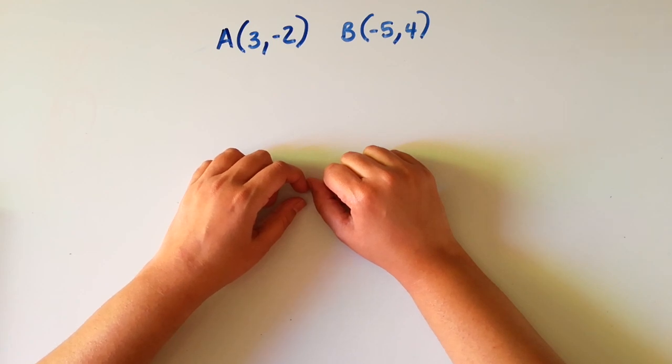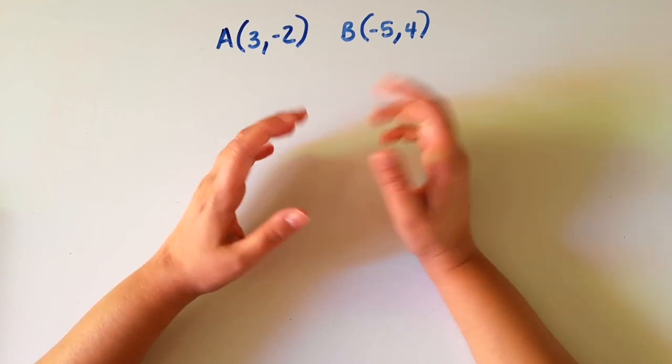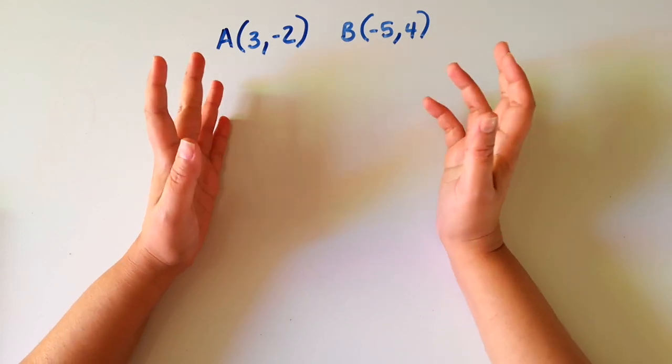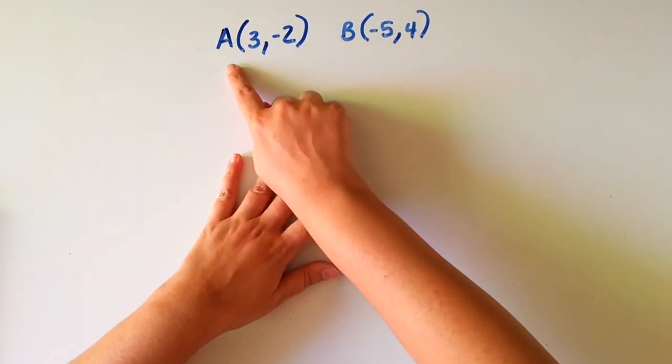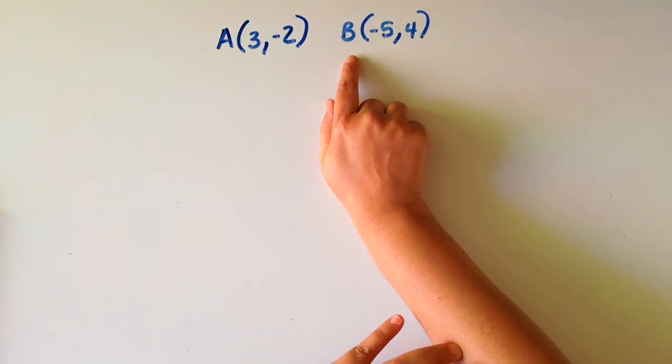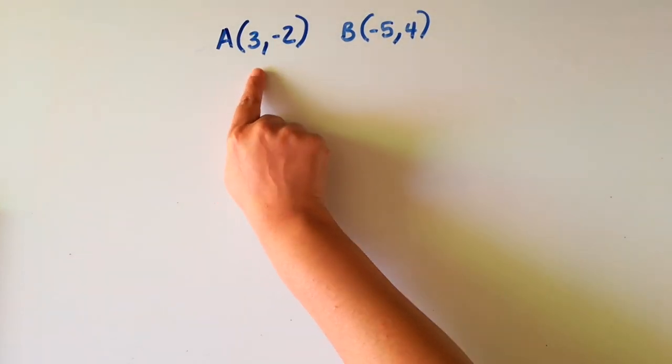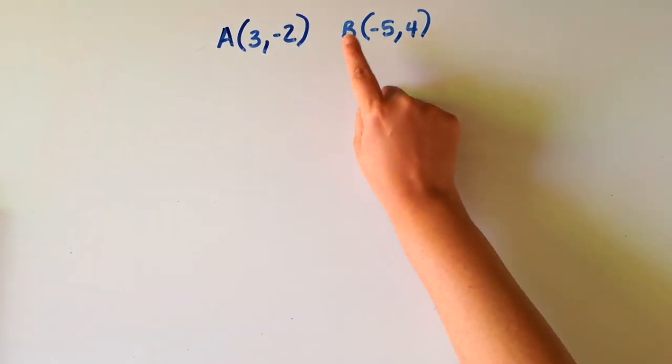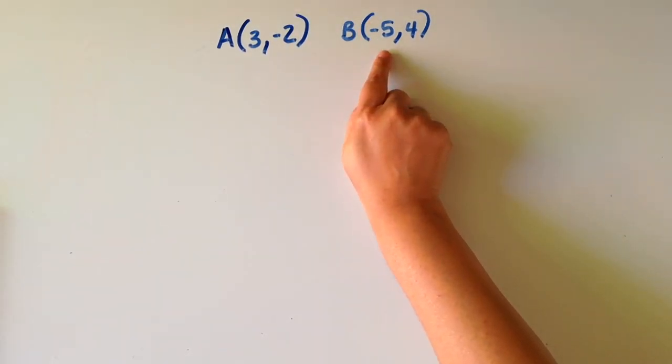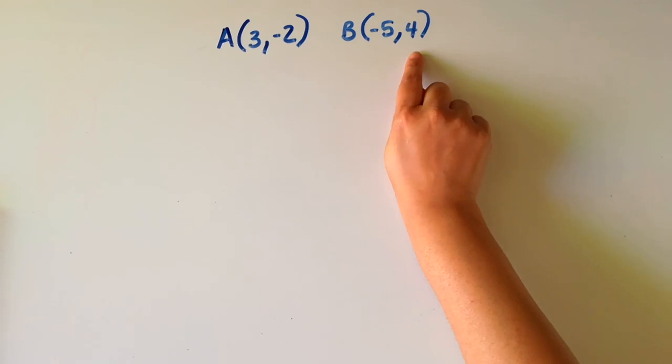Any point on a Cartesian plane will have an x-coordinate and a y-coordinate. For example, we have these two points here, A and B. A has an x-coordinate of 3 and a y-coordinate of minus 2, and B has an x-coordinate of minus 5 and a y-coordinate of 4.